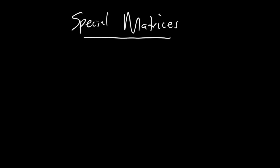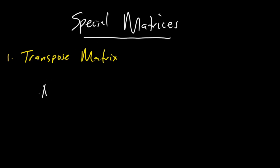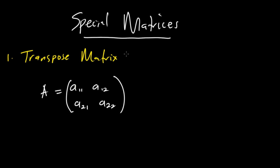The first and most common type of special matrix is the transpose matrix. To explain transpose matrices, if you have a matrix A with elements A11, A12, A21, and A22, we interchange the rows and columns of this matrix to obtain another matrix called B.